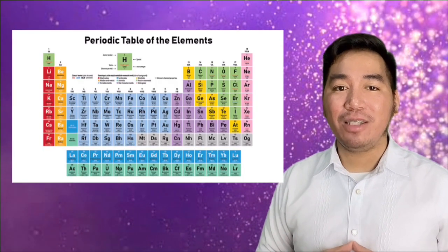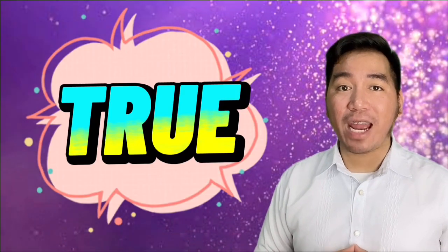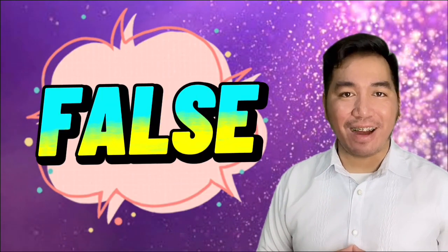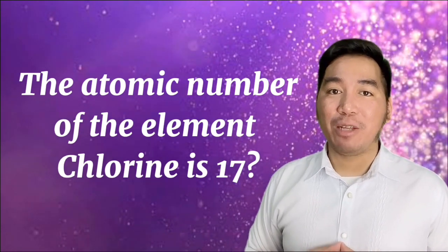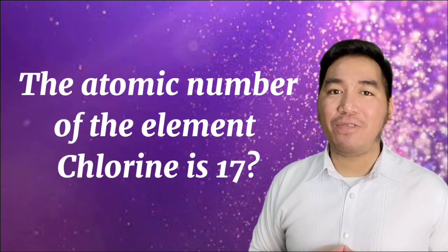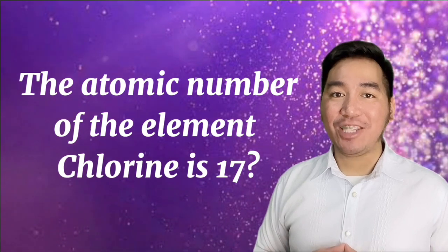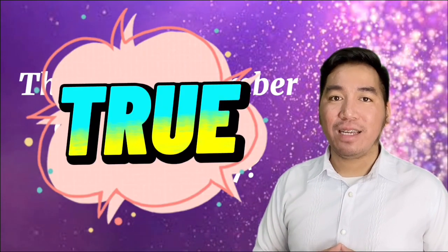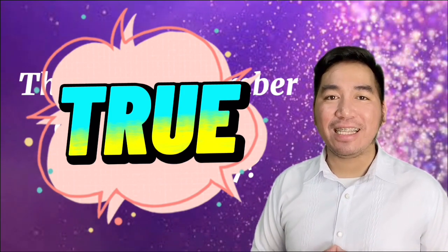Let's try this one. You can open your periodic table to answer the following questions by stating true if the statement is correct and false if it's not. Are you ready? Alright, let's begin. The atomic number of chlorine is 17. You can pause the video for you to check your periodic table and find the atomic number of element chlorine. Now, what is your answer? The answer is true. The atomic number of chlorine is 17. Very good.